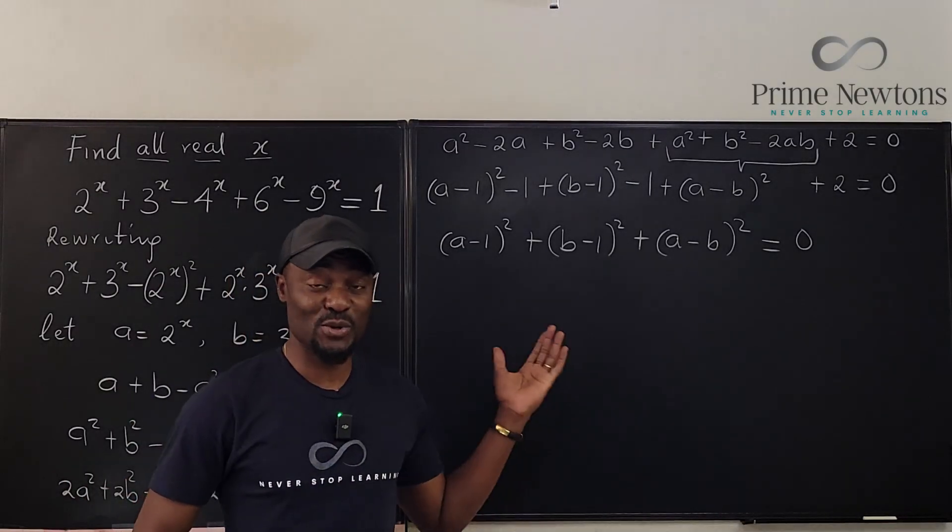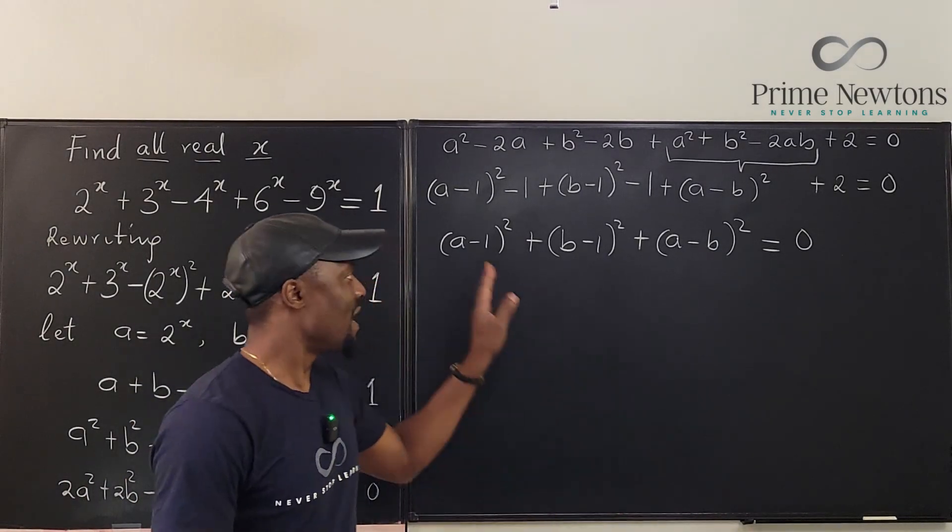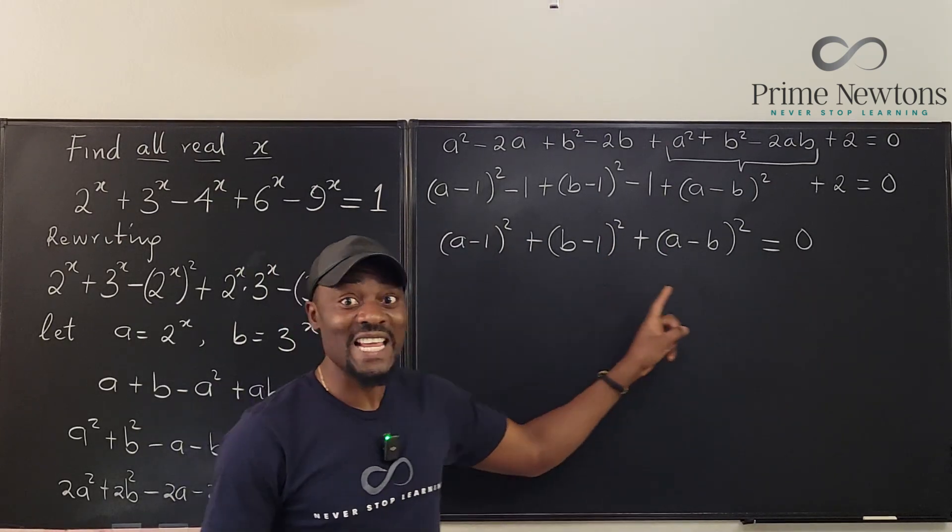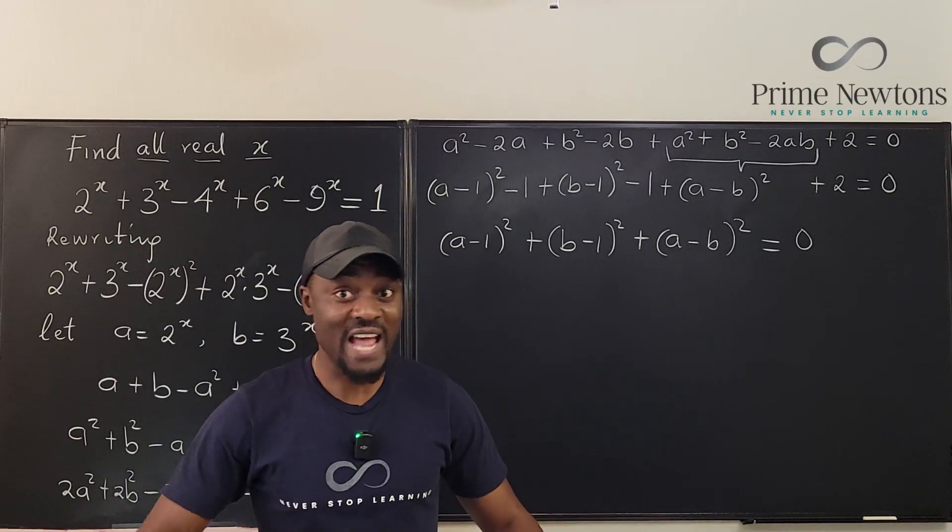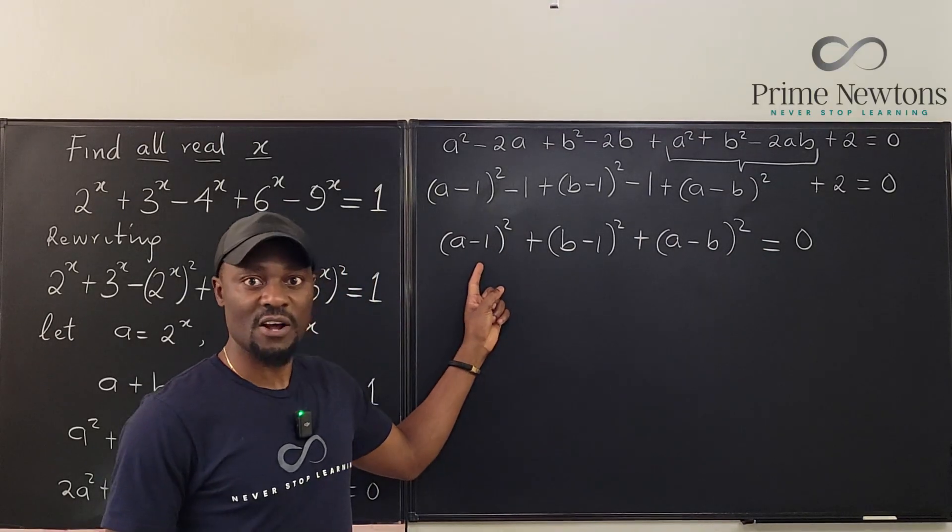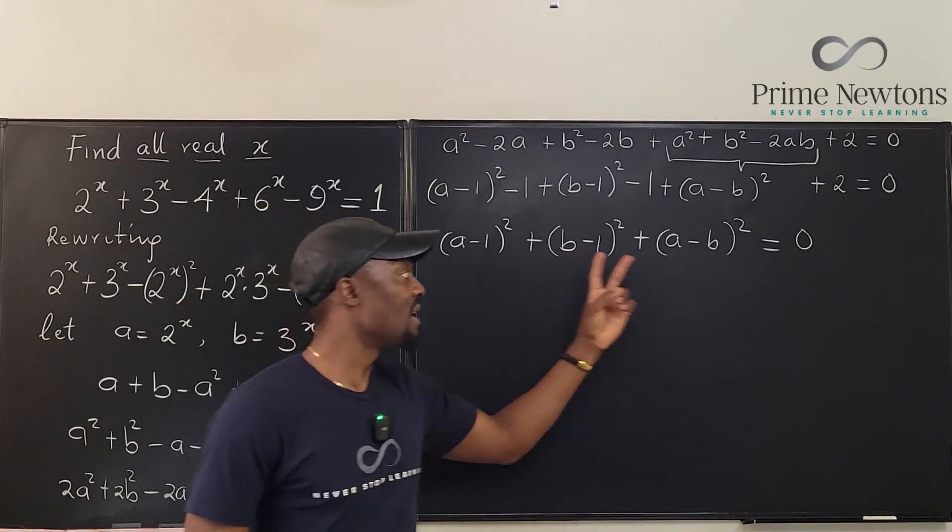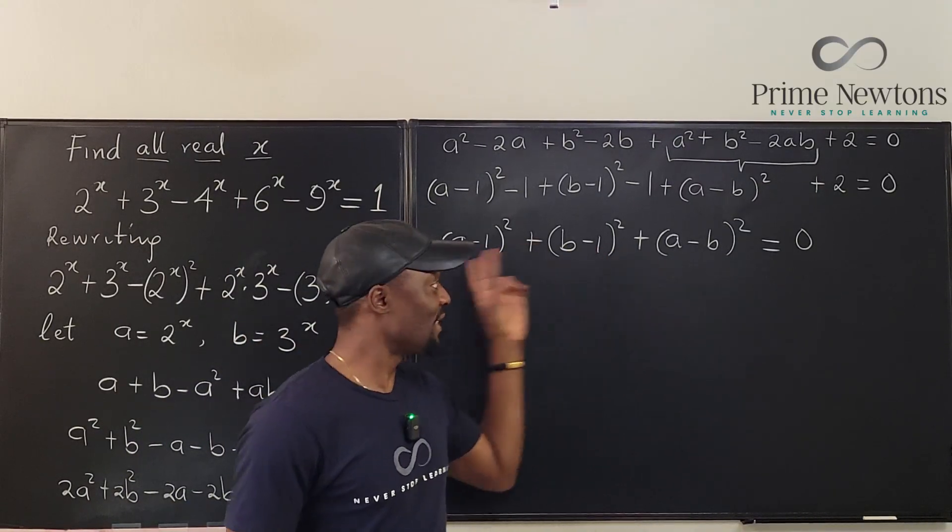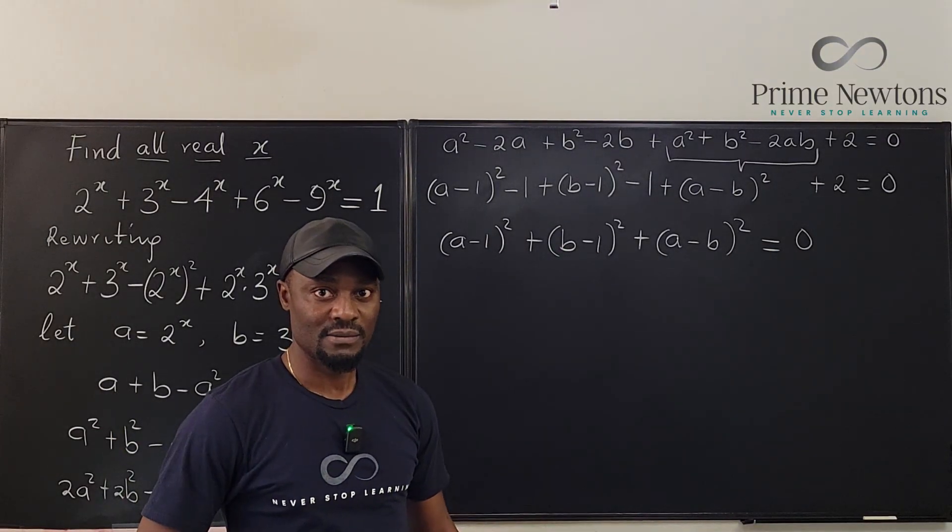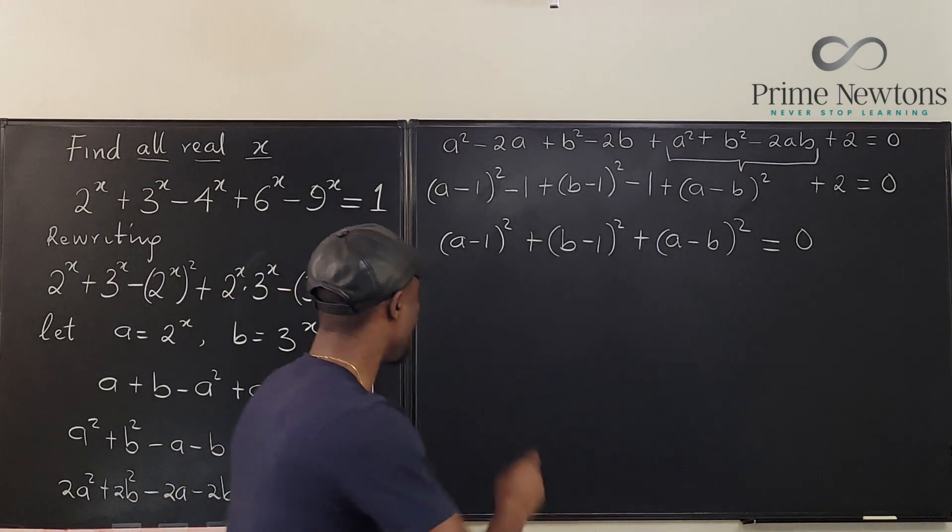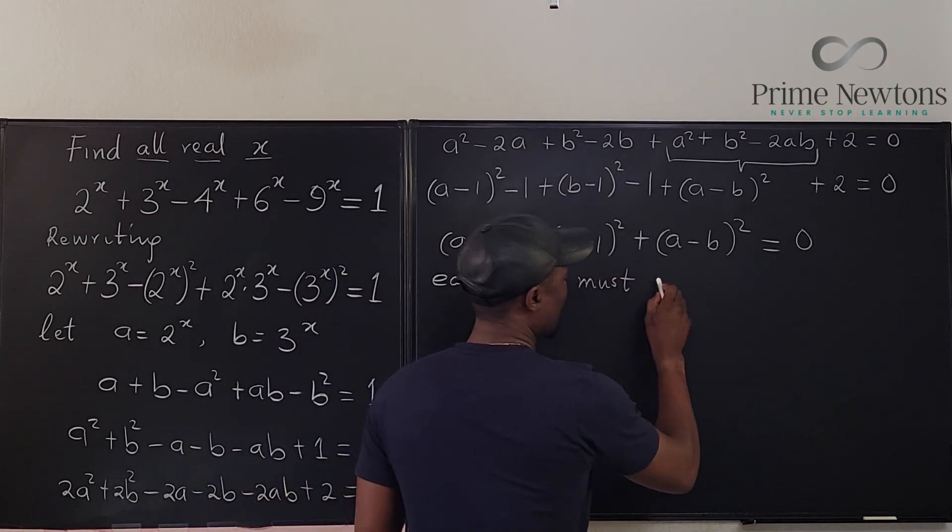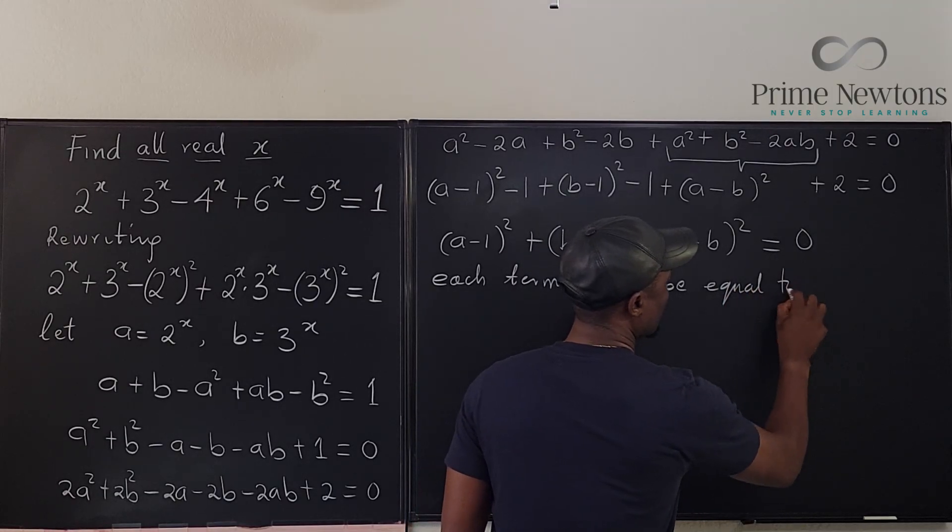This is the end of the struggle because you can draw conclusions from here. Whenever you add stuff together you may get zero, but if everything you're adding is not negative, you're adding only positive numbers together, you can never get zero. This cannot be negative because it's a square, this cannot be negative, so everything you're adding can never be zero unless each of these is zero in itself. So each term must be equal to zero.